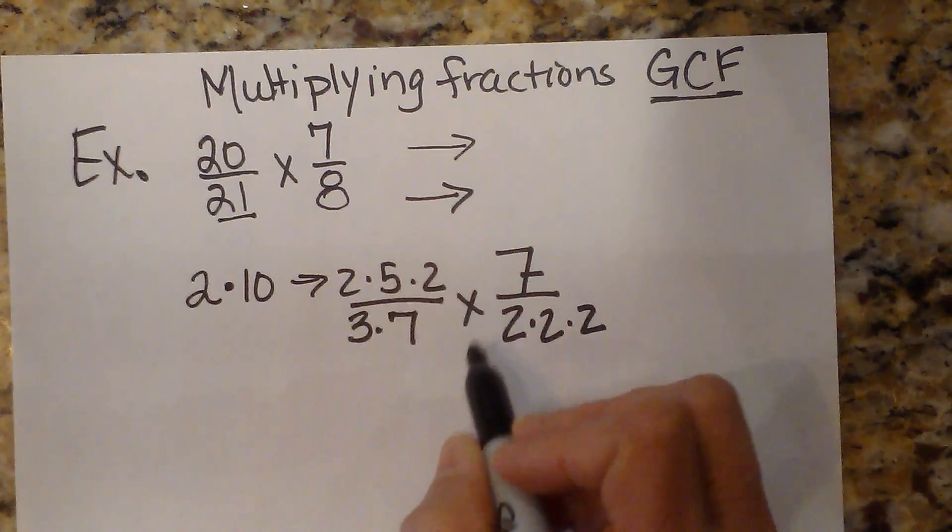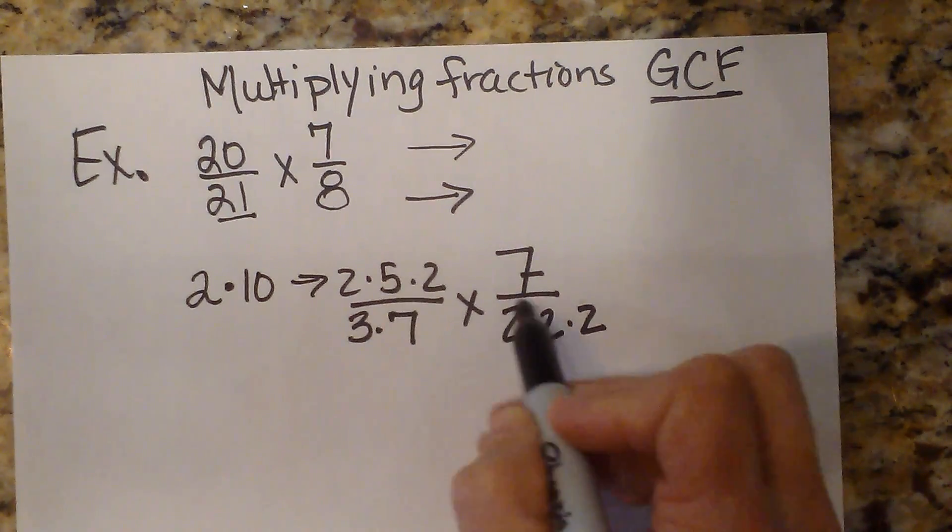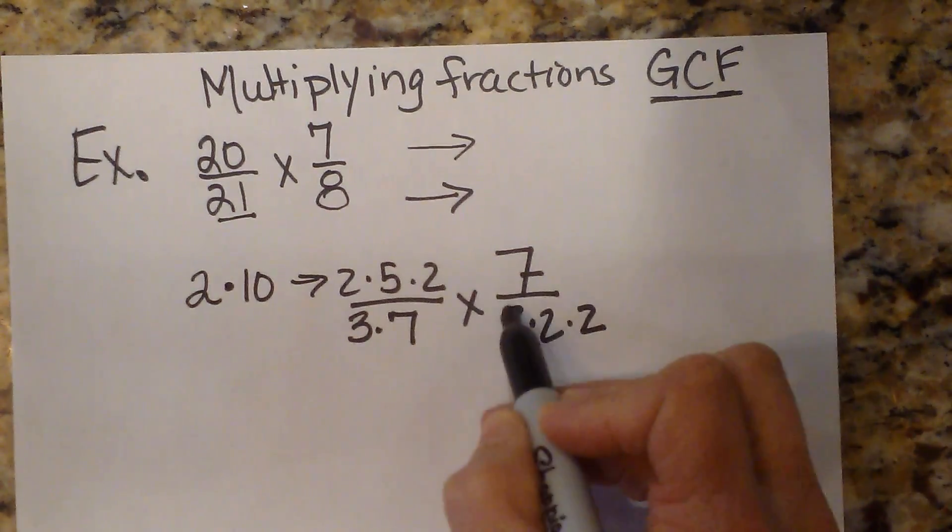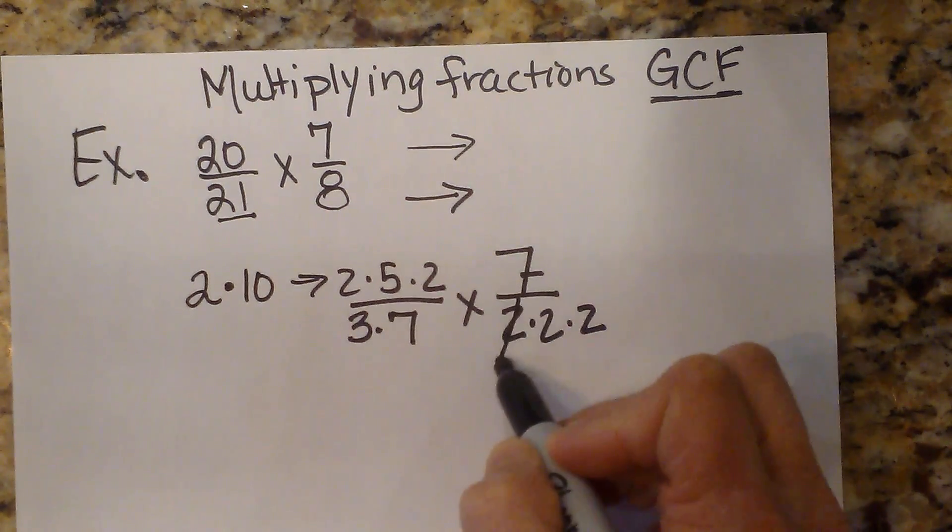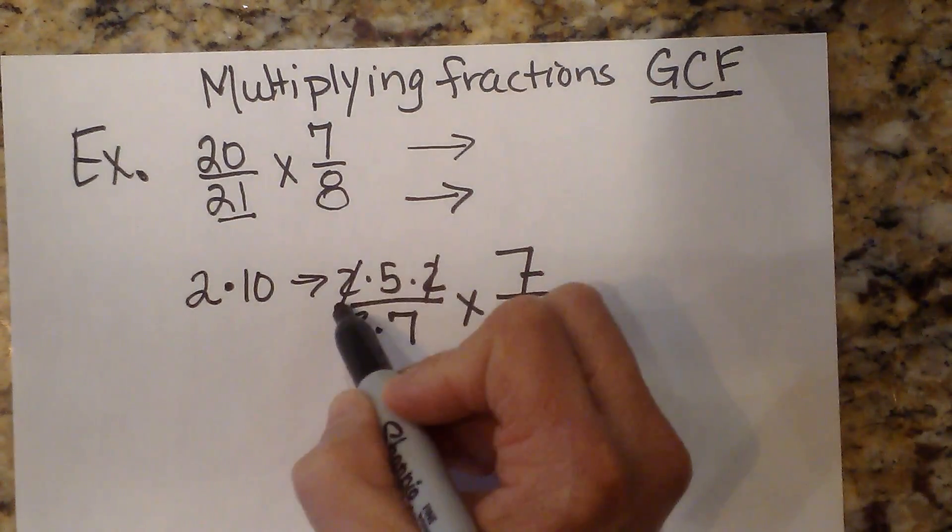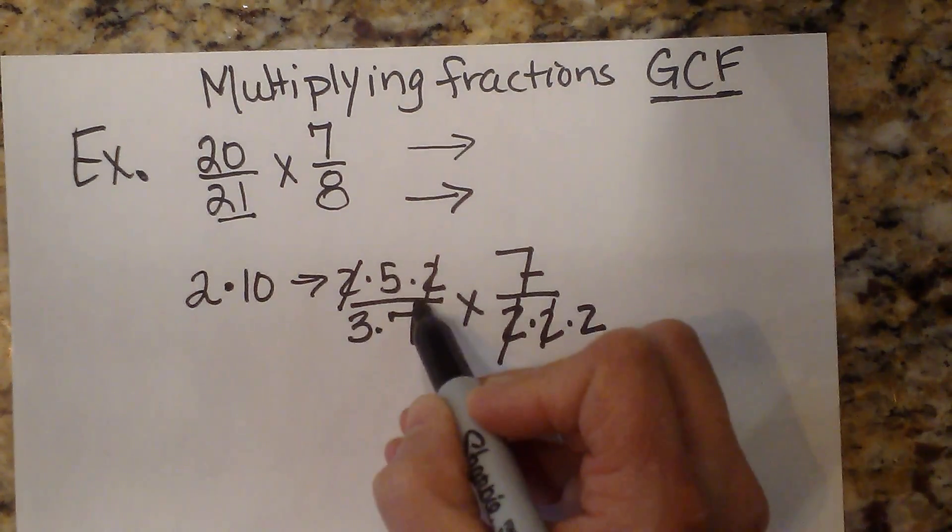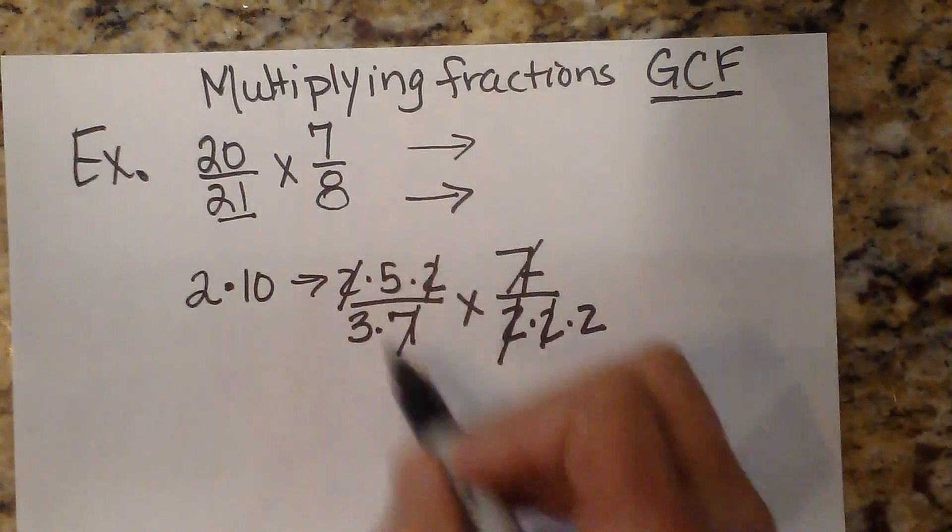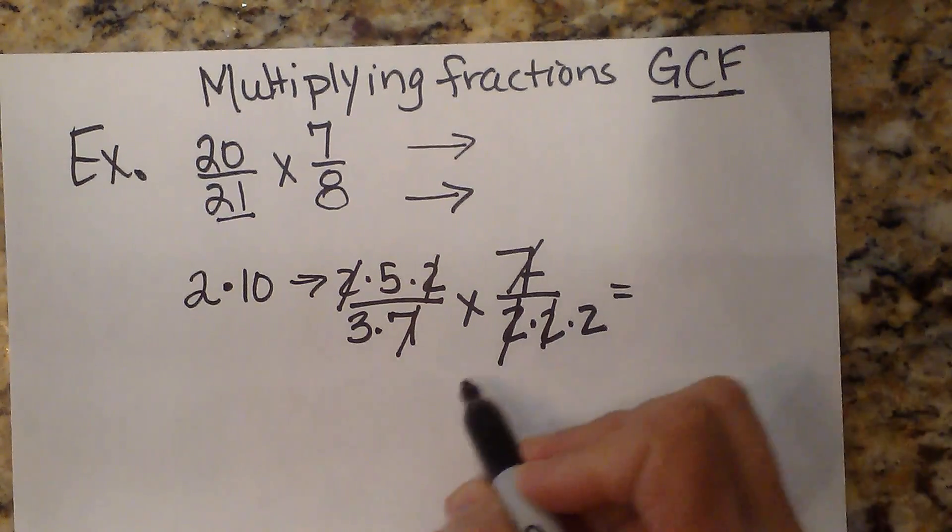Now what I'm going to do is cancel any factor in the bottom with any like factor in the top, because we know any number over itself is 1. So I can cancel the 2's out. I can cancel another set of 2's out. And then I can also cancel a 7 out. I can just start canceling—I call it get cancel happy.